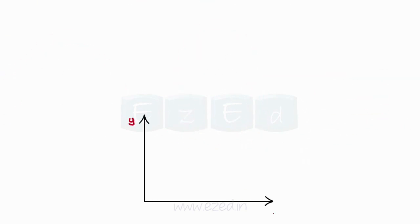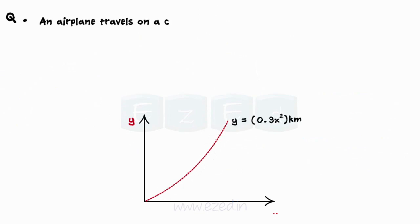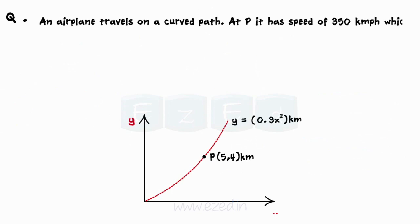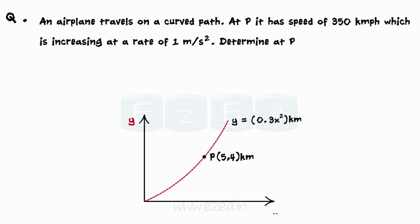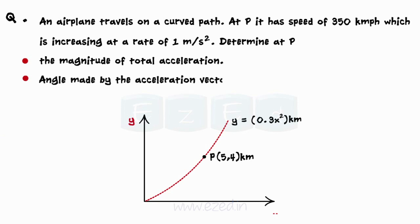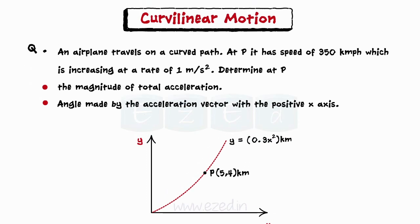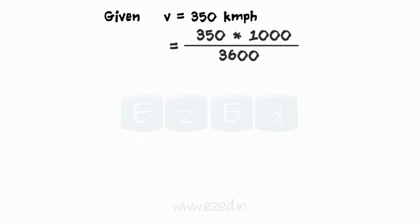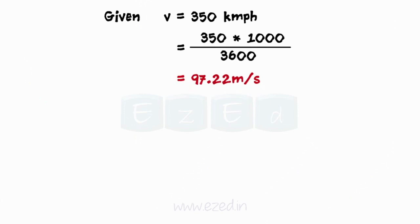Let's take an example of curvilinear motion. An airplane travels on a curved path. At point P, it has a speed of 350 kilometers per hour, which is increasing at a rate of 1 meter per second square. Determine the magnitude of the acceleration at point P and the angle made by the acceleration vector with the positive x-axis. We have been given the speed of the airplane at point P. First, convert the given speed of the airplane into meters per second.